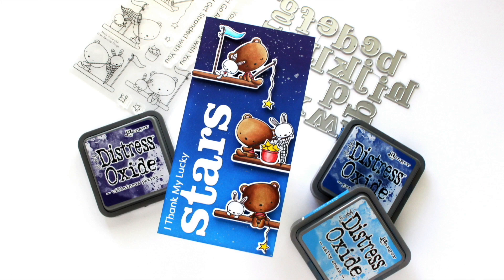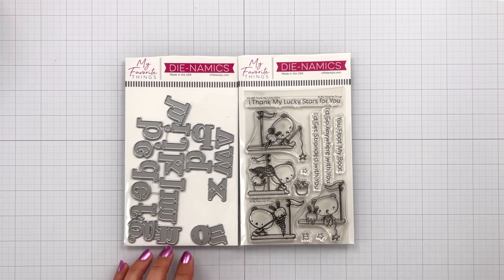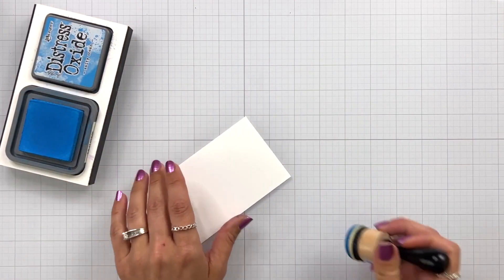The stamp set I'm using today is called Thank My Lucky Stars from My Favorite Things. I love these cute little bears where it looks like they're catching stars, and I'm also going to use the modern serif alphabet.